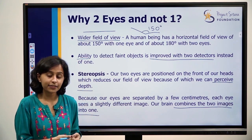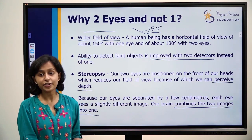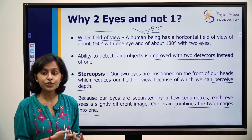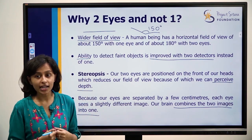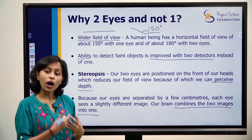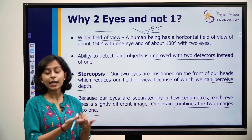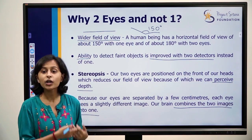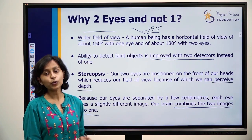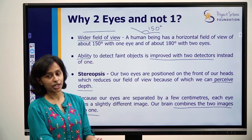We call them visually impaired. They cannot see, so how can we help them? We can help them through eye donation.